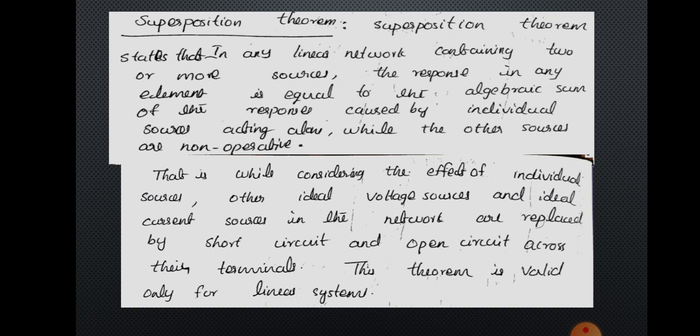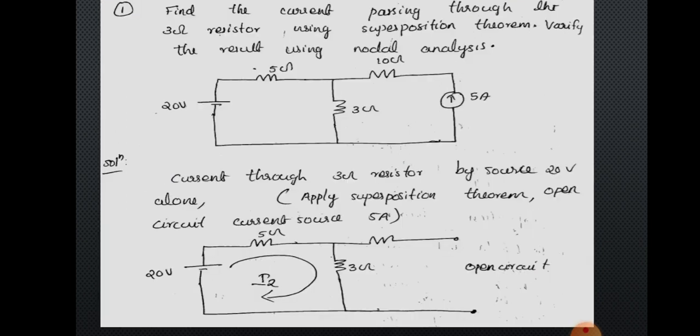So that is the superposition theorem, and you will get the idea clearly once you do a problem. Again, the superposition theorem principle: in any linear network containing two or more sources, the response in any element is equal to the algebraic sum of the responses caused by individual sources acting alone while the other sources are non-operative. First, let us do a problem: find the current passing through the 3 ohm resistor using superposition theorem.